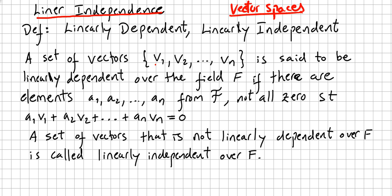A set of vectors v1, v2, ... vn is said to be linearly dependent over the field F. So a set of vectors is always over some structure, in this case over a field, and we are going to call the field F. If there are elements a1, a2, ... an from the field, so these are scalars from the field, not all zero,